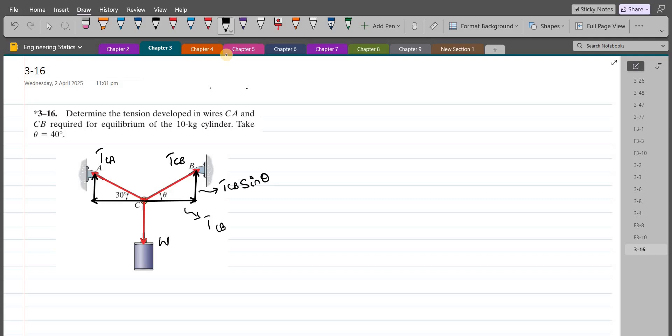The vertical component of TCB force is TCB cos theta. The vertical component of TCA force is TCA sin 30, and the horizontal component of TCA force is TCA cos 30. The weight force is mass into 9.81, so 10 into 9.81. So weight is 98.1 Newtons.